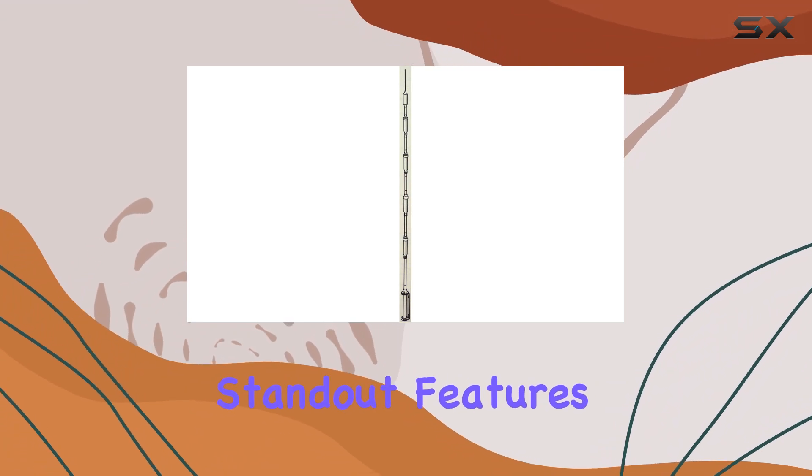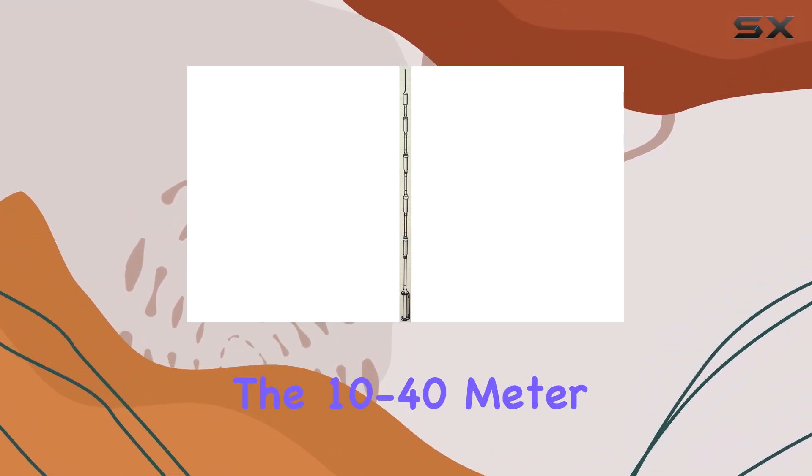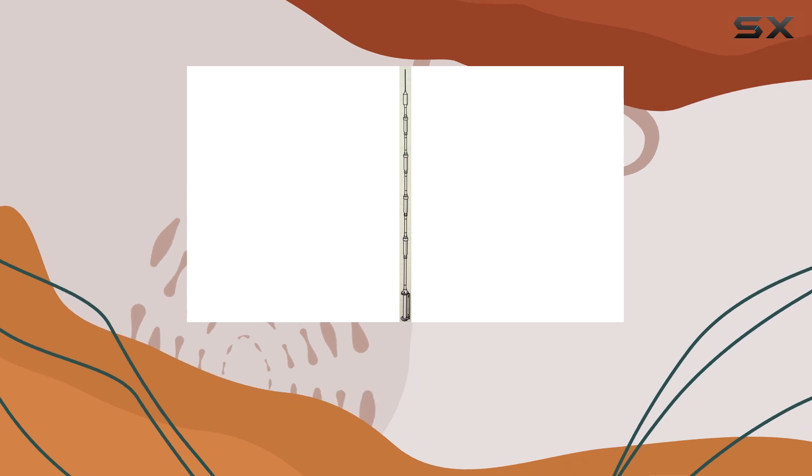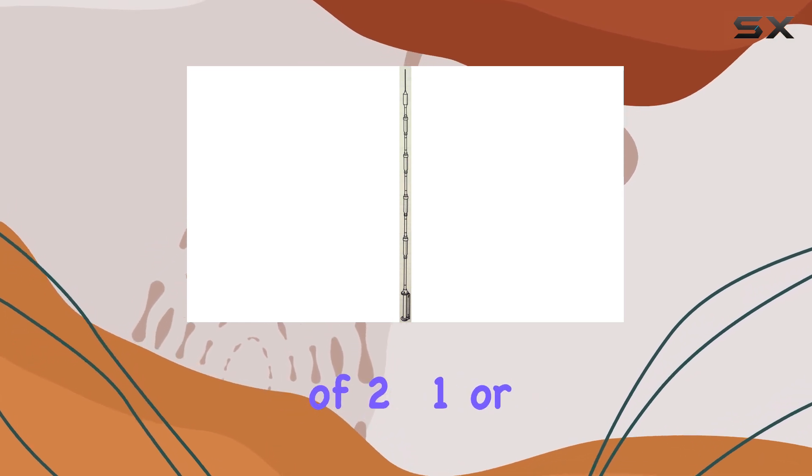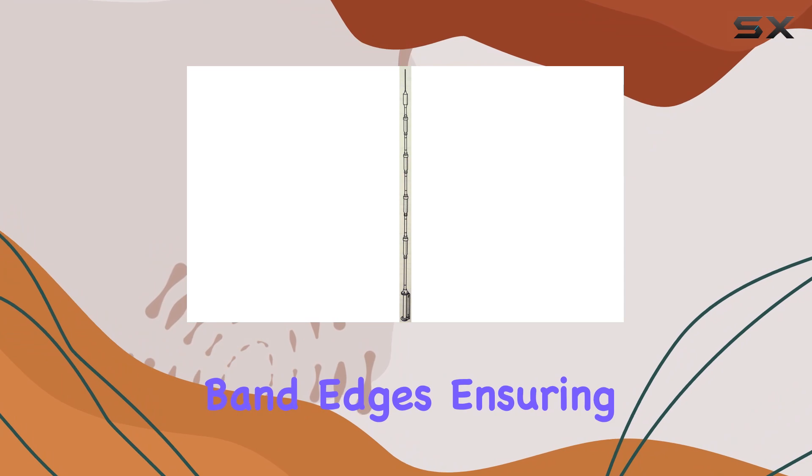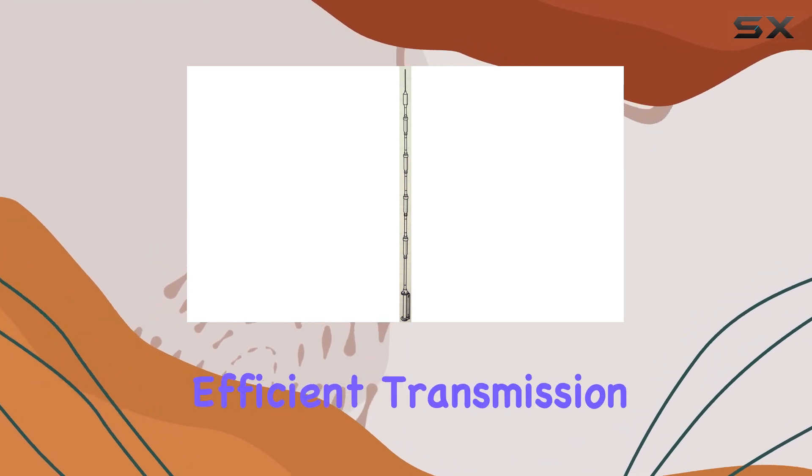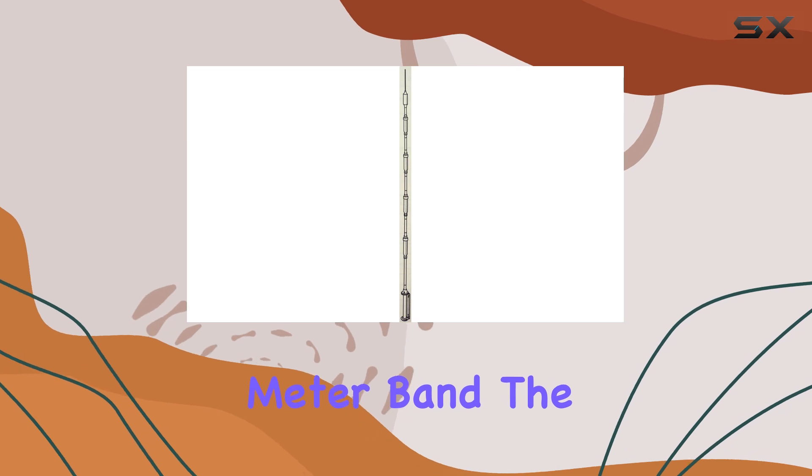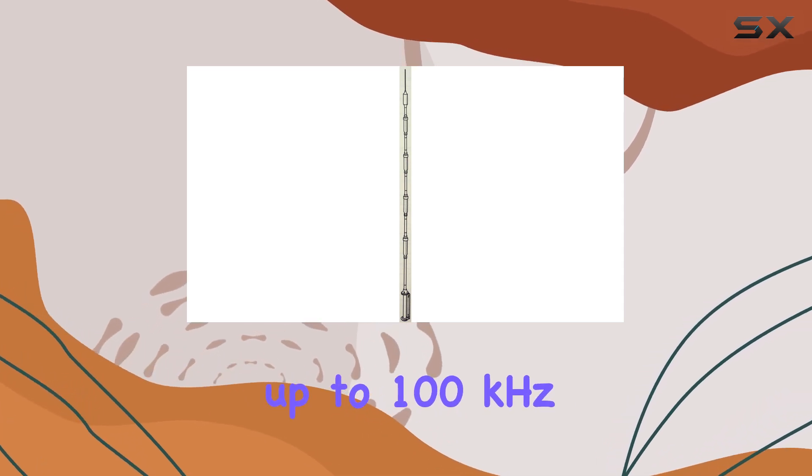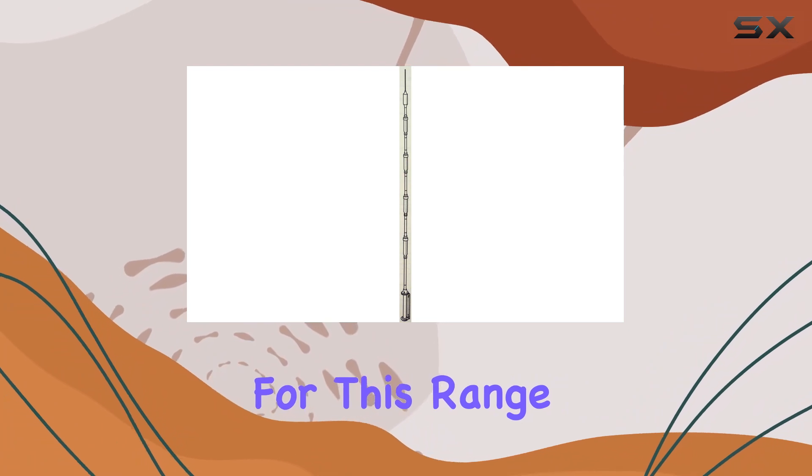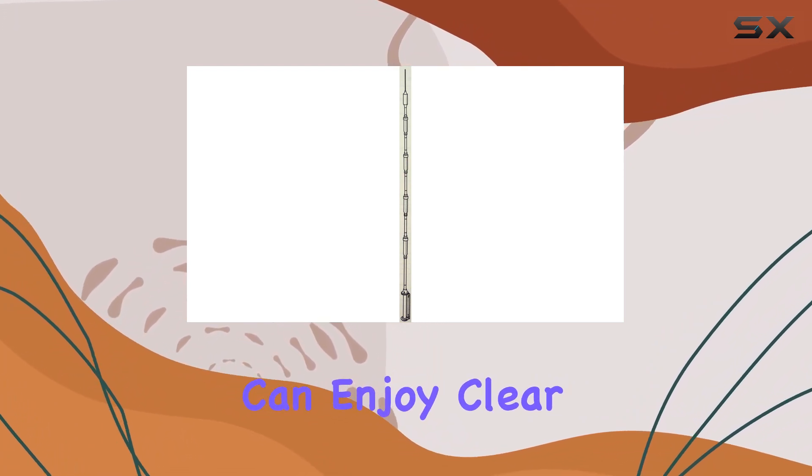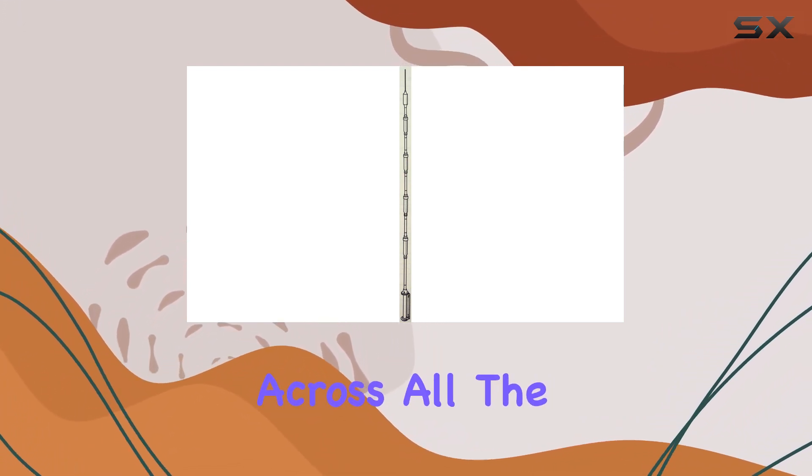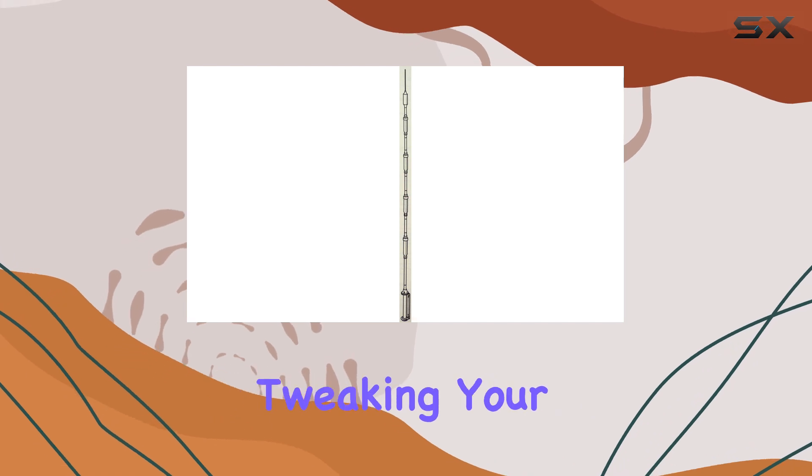One of the standout features of the Hustler 6 BTV is its bandwidth. On the 10 to 40 meter bands, you can expect a VSWR of 2.1 or better at the band edges, ensuring efficient transmission and reception. For the 75-80 meter band, the antenna provides up to 100 kilohertz of bandwidth, which is substantial for this range. This means you can enjoy clear, strong signals across all the covered bands without constantly tweaking your setup.